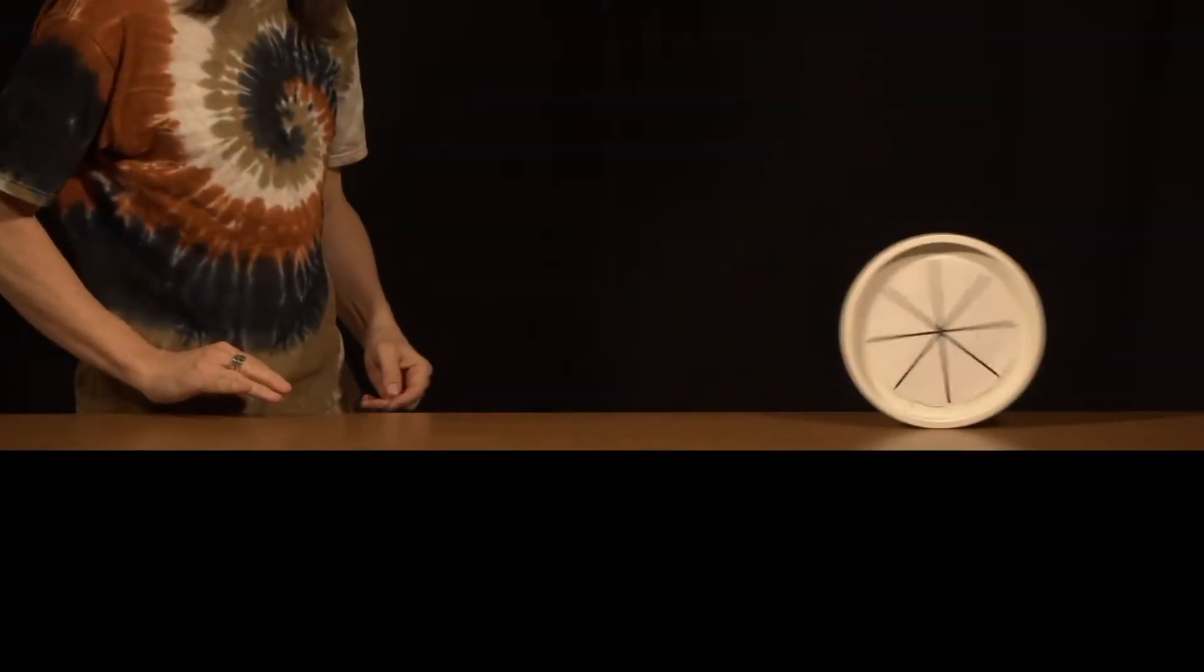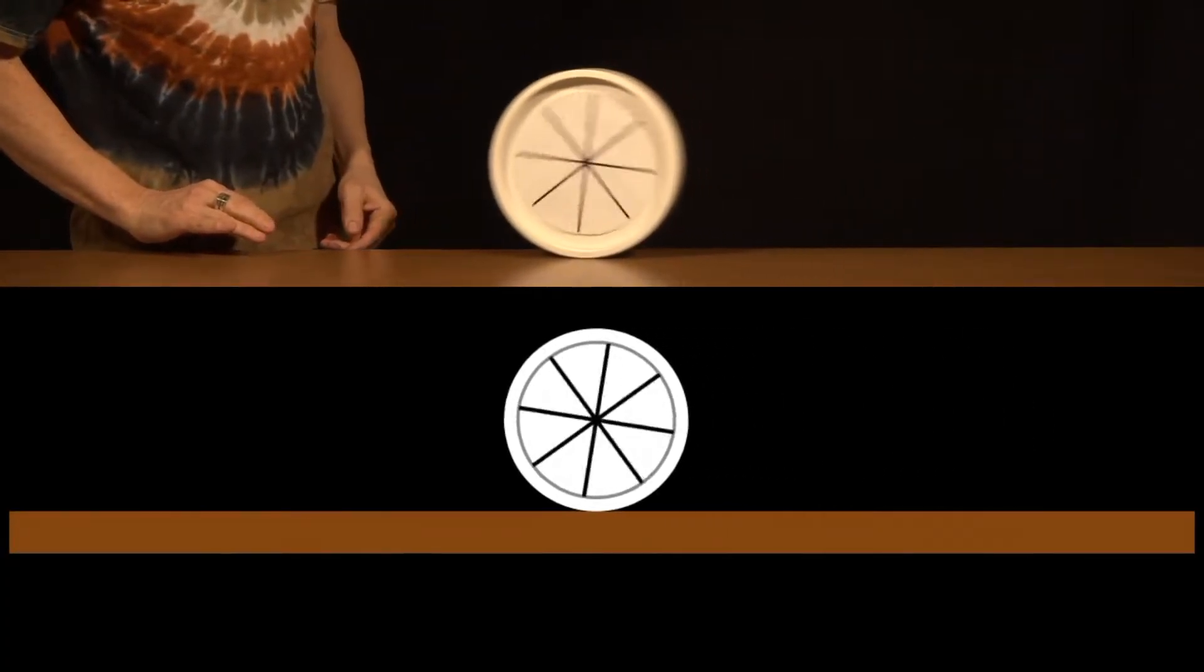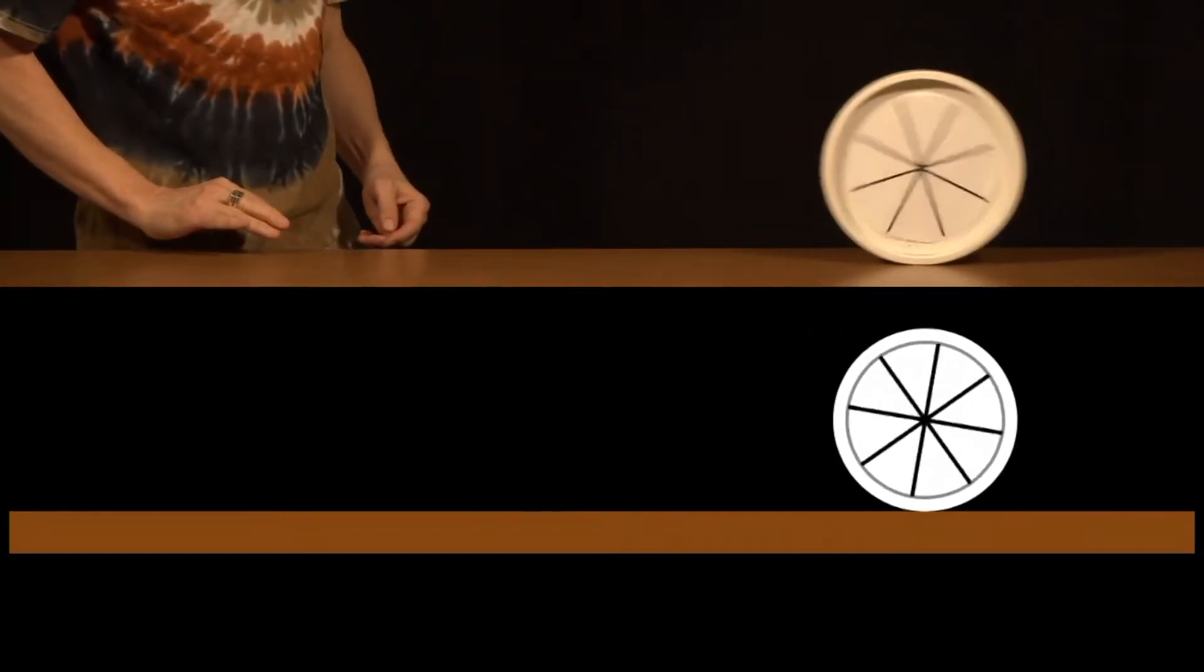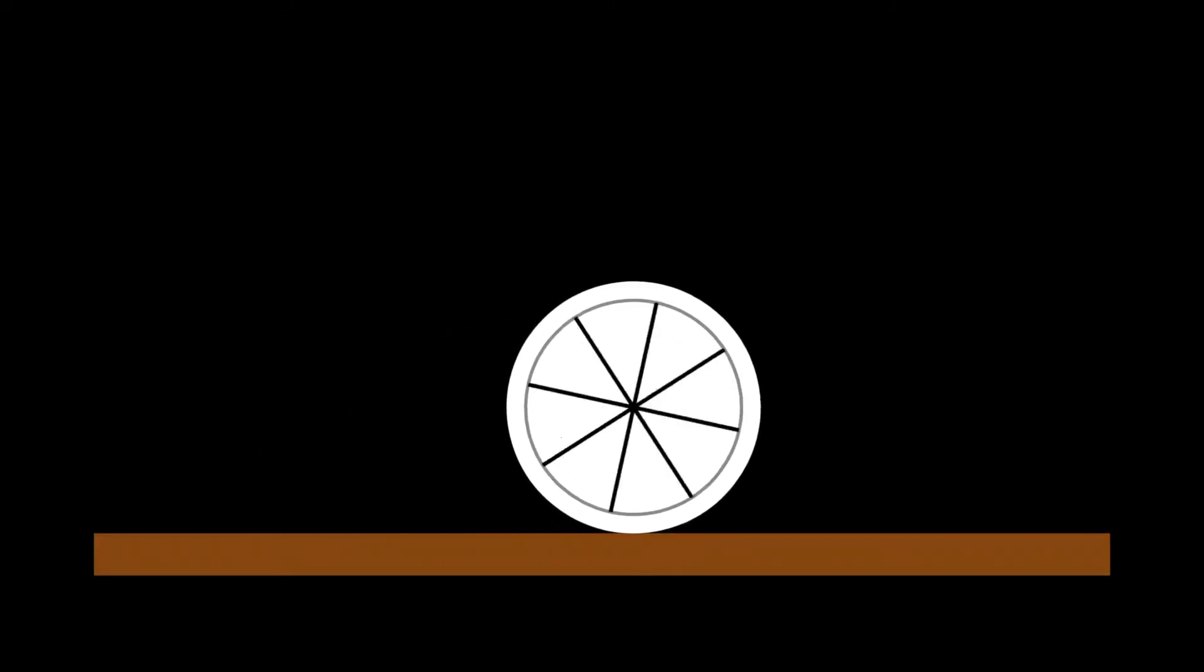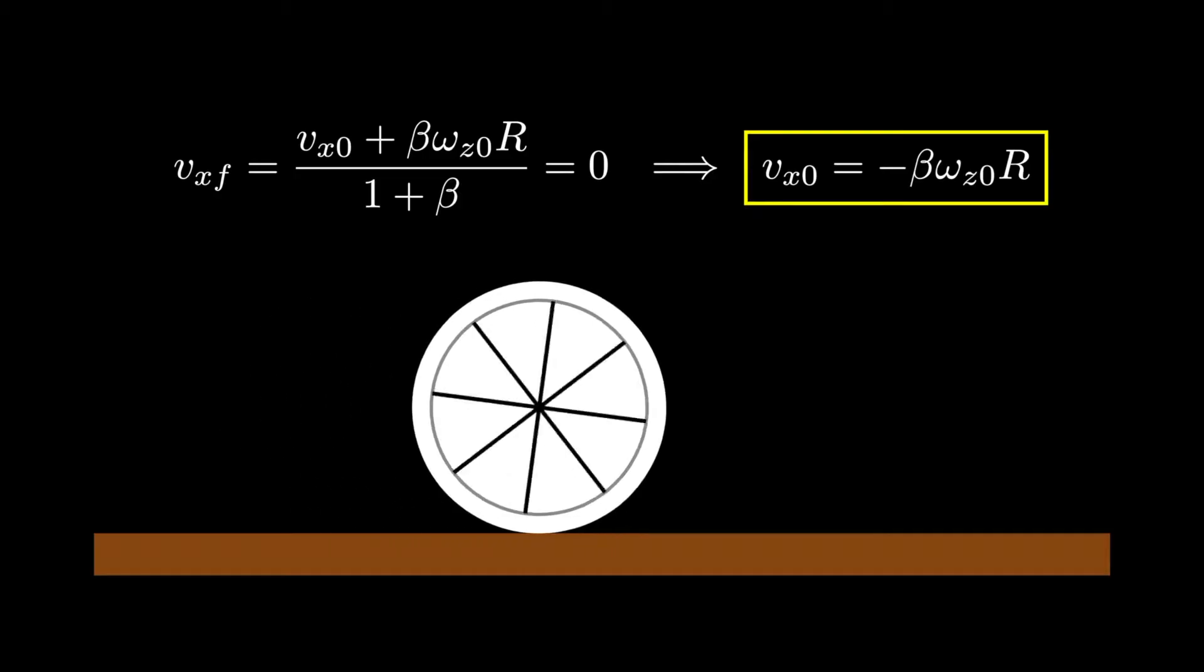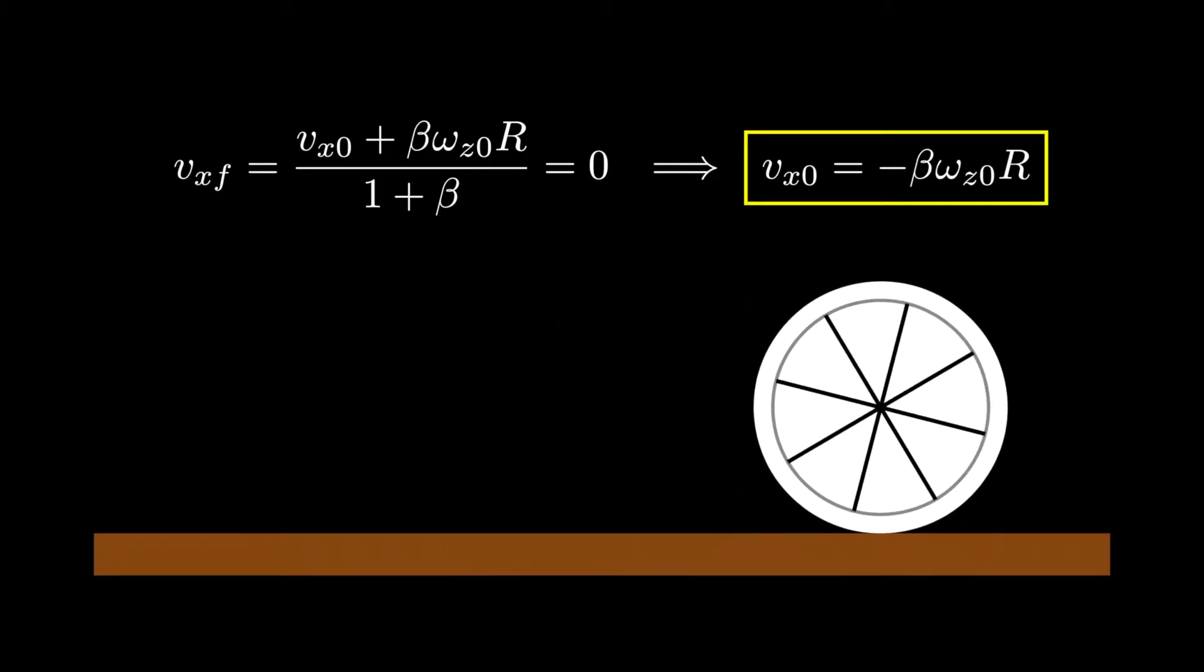At this point, you might be wondering how all this relates to reality, so let's look at a side-by-side comparison of an actual sliding wheel and the solution we just found. As you can see here, the simulated motion compares remarkably well to the real world. Now that we have the solution, the last thing I'd like to discuss is the situation where the object's final velocity is zero. To find the answer, all we have to do is set the final velocity equal to zero. The expression we end up with provides a constraint between the initial translational and rotational velocities. An object thrown with initial conditions that satisfy this constraint will slide to a perfect standstill.